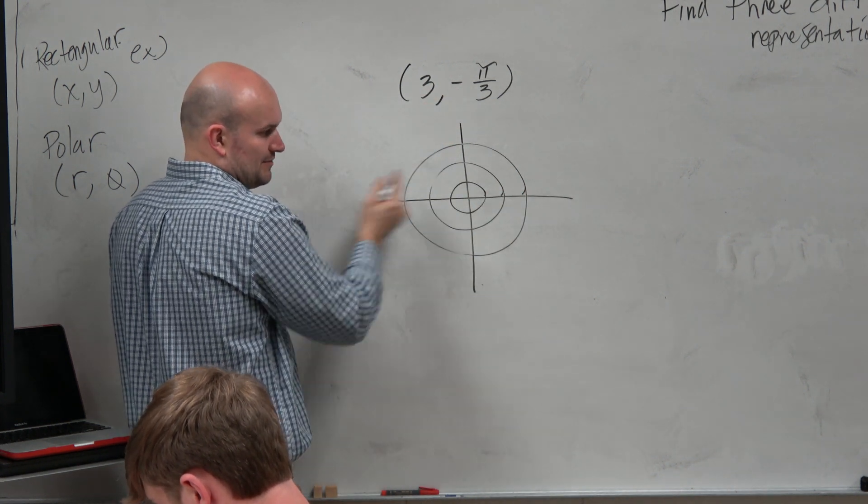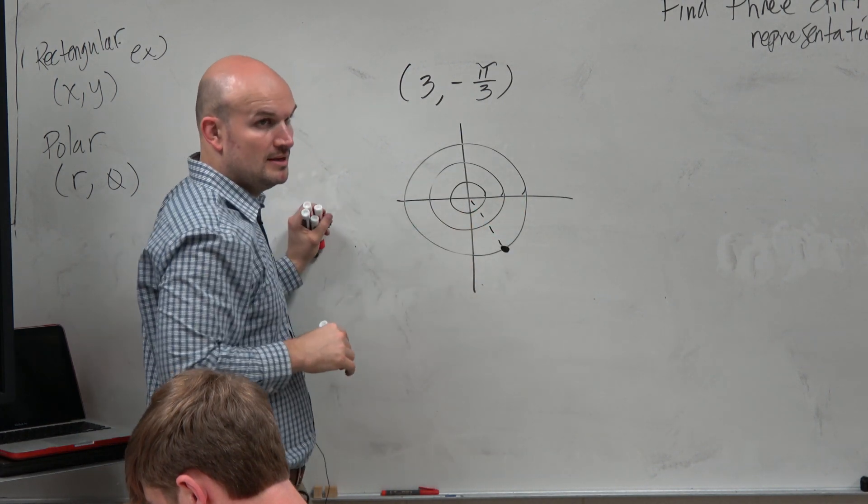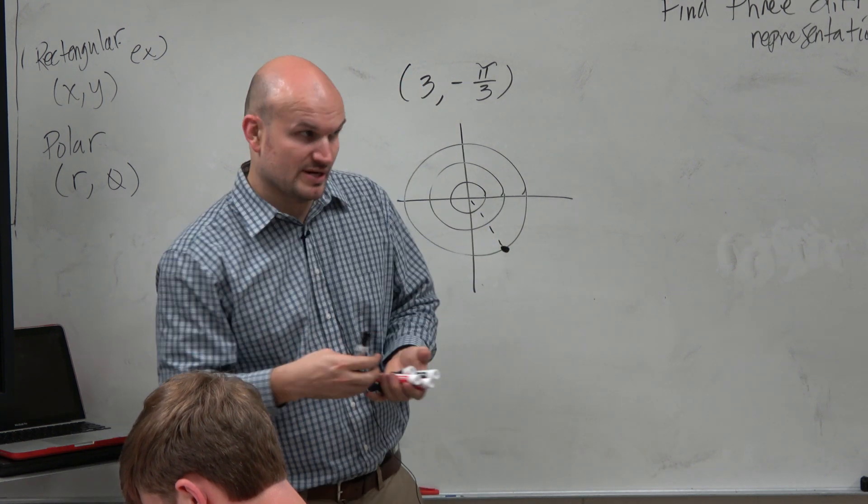And then we have the angle negative pi over 3, which is roughly going to take us to right there. Now basically, my question is asking you, can we represent this like three different ways?